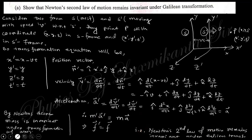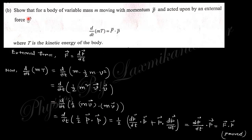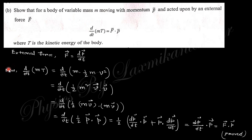The next question says: show that for a body of variable mass m moving with momentum p, the acting external force is F = d(√(mT))/dt, where T is the kinetic energy of the body. The external force is nothing but dp/dt — the rate of change of linear momentum is the force. To find this from the right-hand side, we evaluate d/dt of m times T, where T is the kinetic energy (½mv²).